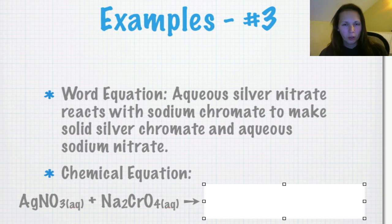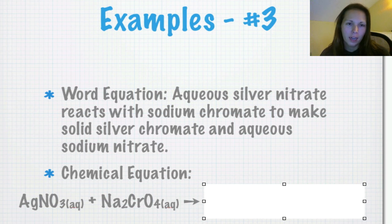Example number three. The word equation says that aqueous silver nitrate reacts with sodium chromate to make solid silver chromate and aqueous sodium nitrate. What you'll see in just a minute is that there are five different types of reactions. This one is what we call a double replacement reaction. So we're going to start. You can see the first half of the equation. Make sure you take time to write that down.